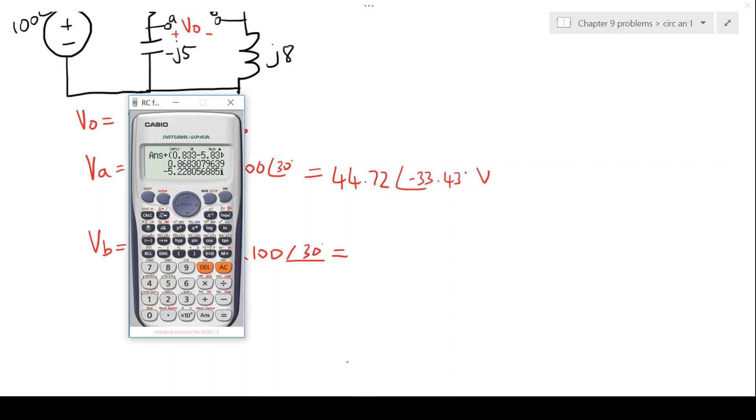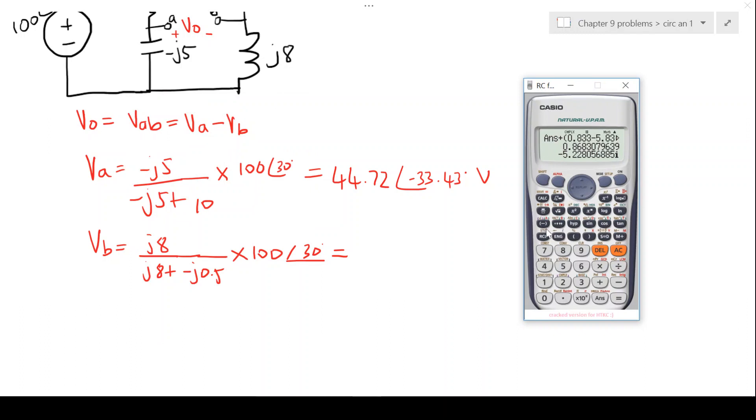And the second one that we've got on the screen. So that will be 8i over 8i minus 0.5i all multiplied by 100 angle 30.